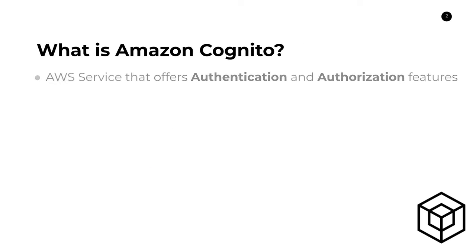So what is Amazon Cognito? Cognito is an AWS service that offers authentication, sometimes referred to as AuthN, and authorization, sometimes referred to as AuthZ. Authentication refers to the process of identifying who a person is — done through a login form or facial identification on an iPhone, for example. Authorization is the other half: it refers to what an individual has access to, such as an AWS service or an admin-only webpage. So AuthN is who a user is, and AuthZ is what a user has access to. This will become more relevant later on.